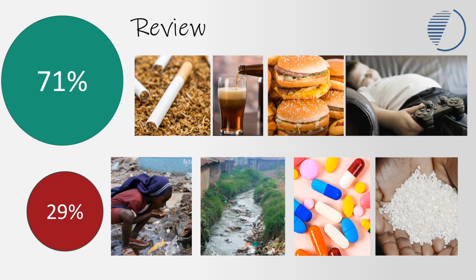Let's review our understanding. 71% of deaths on Earth are due to non-communicable diseases, and the risk factors are tobacco, alcohol, fast food, and physical inactivity — often leading to obesity. By contrast, 29% are due to communicable diseases, where the risk factors are very different: lack of clean water, lack of sanitation, poor provision of medical supplies including antibiotics and vaccinations, and a lack of good nutrition leading to malnutrition and stunting, especially in children.